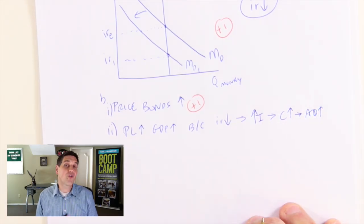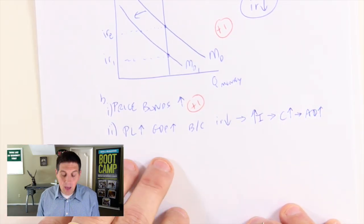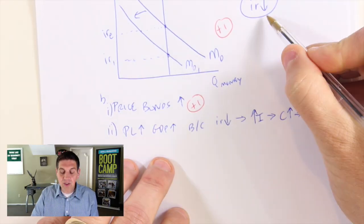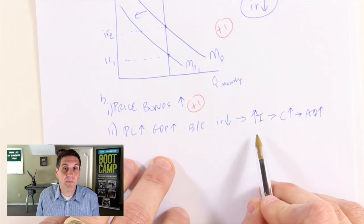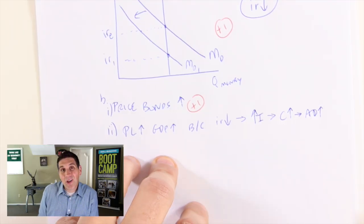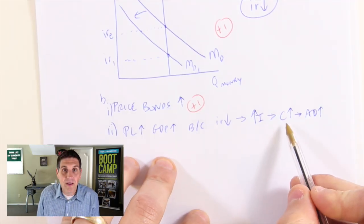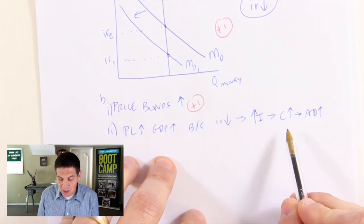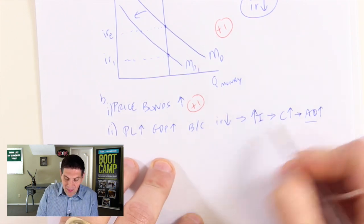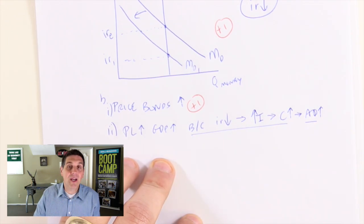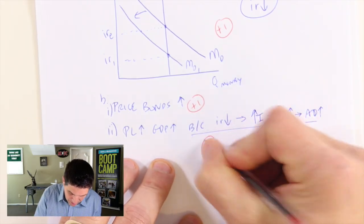You could draw the graph if you wanted, but you won't get extra points. You should understand the concept: lower interest rates mean it's cheaper to take out loans, so there's more business investment. It's also cheaper to buy cars and other interest-sensitive consumer goods, so consumer spending increases. If you explain this, you get another point—one point for B(ii).